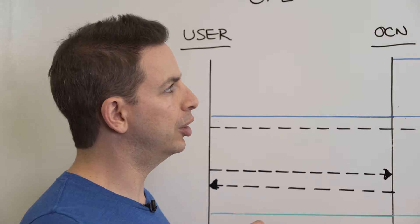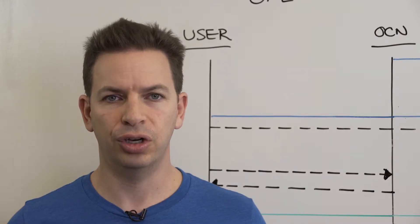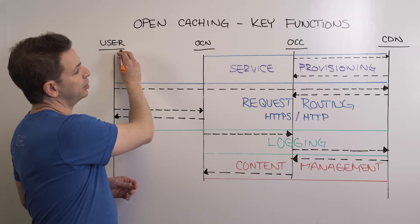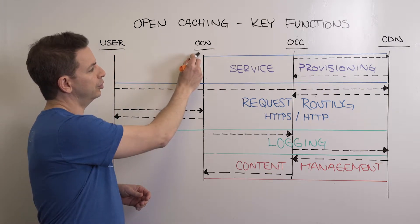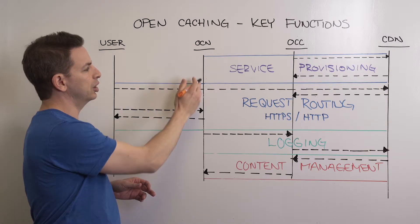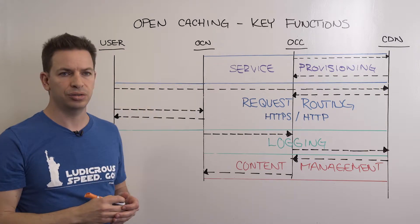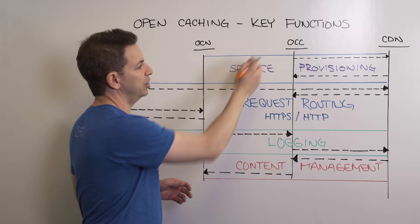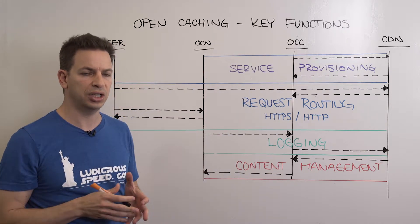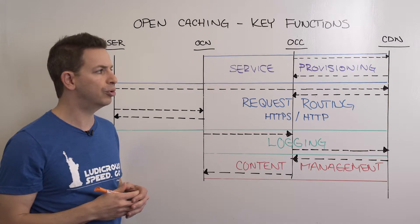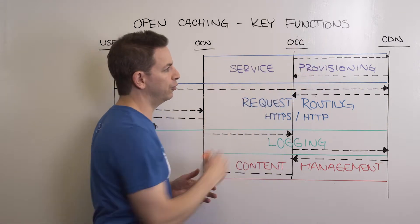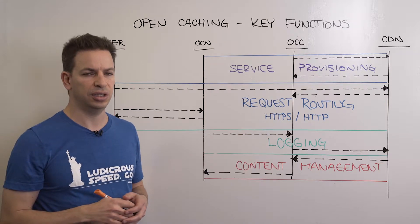We want to talk about the call flow and the key functions involved in open caching. Starting from the left with the user, the first node is the OCN or open caching node — the actual cache nodes that distribute content to users. Then the OCC, or open cache controller, acts as the front end for the entire open caching system and is the entry point for delegating entities like the CDNs, which are the fourth and final element in the equation.